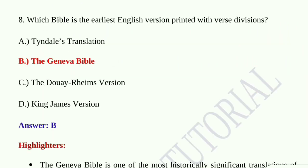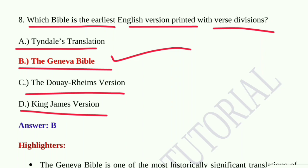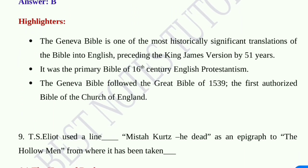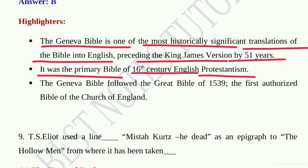Question number eight: Which Bible is the earliest English version printed with verse divisions? Option A, Tyndale's Translation; option B, The Geneva Bible; option C, The Joy Rames Version; option D, King James Version. Option B, The Geneva Bible, is the correct answer. The Geneva Bible is one of the most historically significant translations of the Bible into English, preceding the King James Version by 51 years. It was the primary Bible of 16th century English Protestantism and followed the Great Bible of 1539, the first authorised Bible of the Church of England.